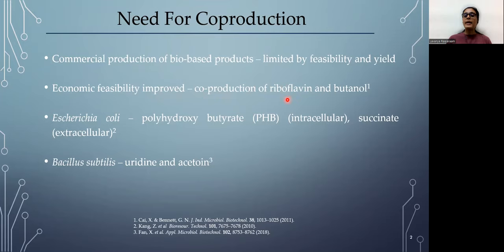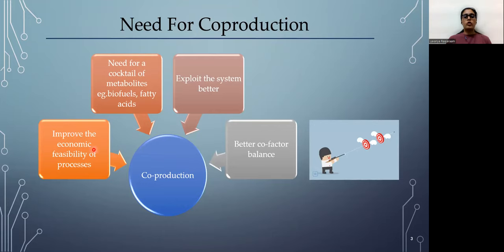For example, in the case of riboflavin and butanol, one product is a high value low volume product, while the other is a low value high volume product. Or we can couple two products such that one is intracellular and the other is extracellular. Therefore, the downstream processing costs are pretty low. In some cases, like the uridine and acetoin production, it is better to co-produce these products than to produce them separately, because they ensure better cofactor balance and therefore the yield achieved is higher for both the products involved.